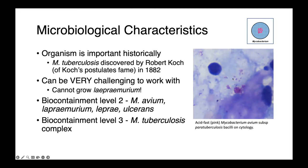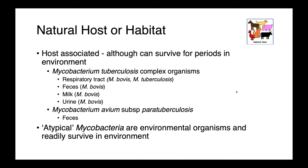In this image on the right, you can see some acid-fast bacilli — these bright pink little rods across a blue background. The mycobacterium are host-associated, although they can survive for short periods of time in the environment. The mycobacterium tuberculosis complex organisms are found in the respiratory tract — this is true for M. bovis and M. tuberculosis — as well as feces, milk, and urine, which is the case primarily for M. bovis. Mycobacterium avium subspecies paratuberculosis is one we find in the feces of ruminants. Atypical mycobacteria, so non-tuberculous species, are oftentimes environmental organisms and will readily survive outside of a host.